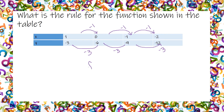So it looks like this function has a slope — remember, it's always y over x, or rise over run — of negative 3 over negative 1, which is the same as 3. But it has a y-intercept of negative 6. So it'll have 3x minus 6.